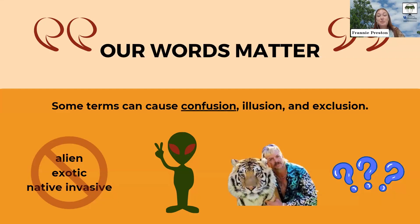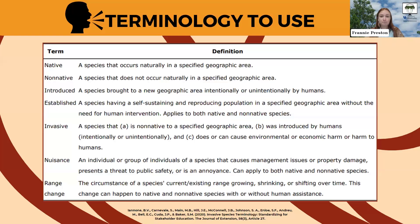Some terms are just confusing. The term native invasive is an oxymoron, because if you remember, for a species to be invasive it has to be non-native and causing harm. So when you say native invasive, it's contradicting itself. You can use the word weed instead, and we'll talk about another term to use in place of native invasive. There are several additional defined terms you can use when talking about invasive plants.